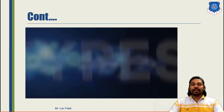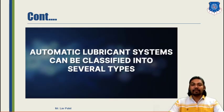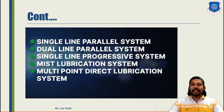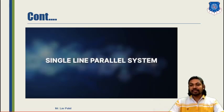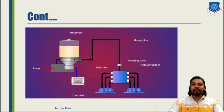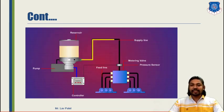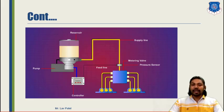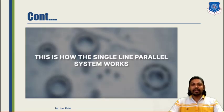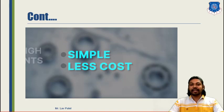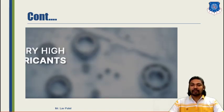Now let us see about the working and types of centralized lubrication systems. We have different classifications: single line, dual line, single progressive system, mist lubrication, and multipoint direct lubrication system. First, let us look at the single line lubrication system for a single machine. In this system, oil is transported from the reservoir with the help of a pump to the required components, and from the return valve the oil can be returned. Its advantages are that it is simple and less costly.